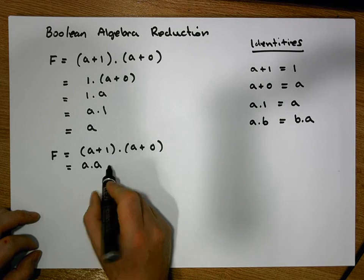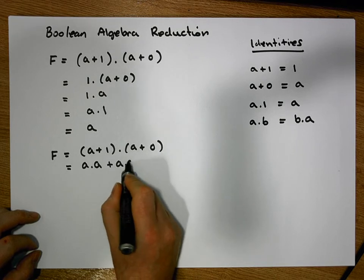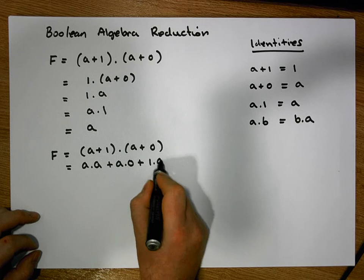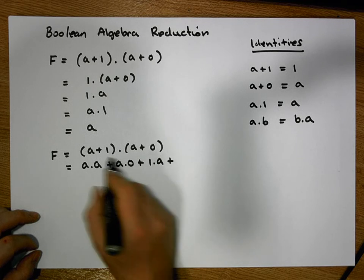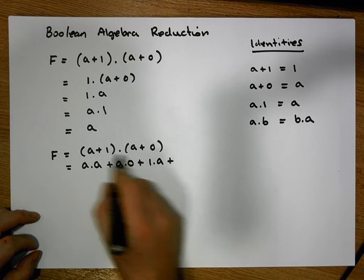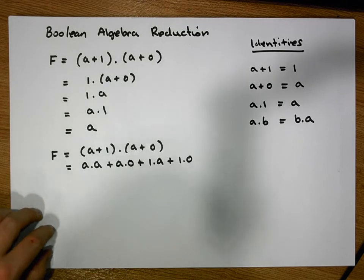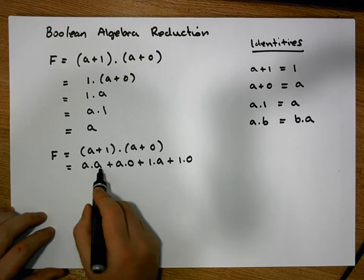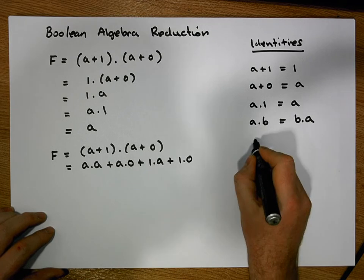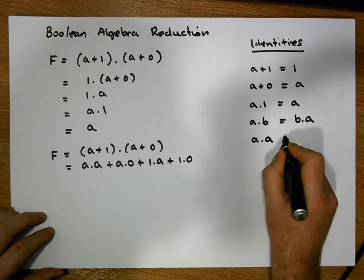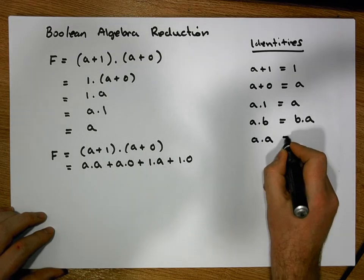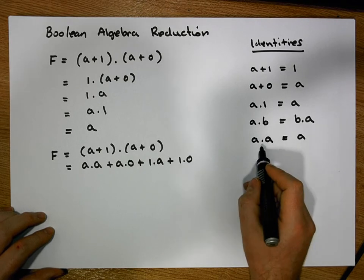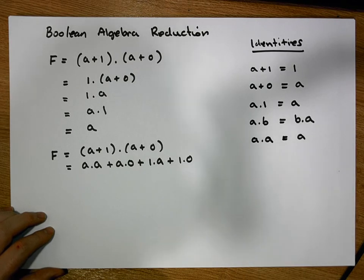We also get 1 AND'd with a, and 1 AND'd with 0. Now, anything AND'd with itself is another key identity: a AND'd with a is always going to be equal to a. This is the Idempotent Law for AND — that's another important identity.